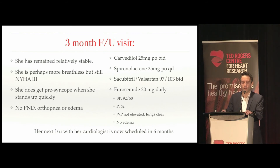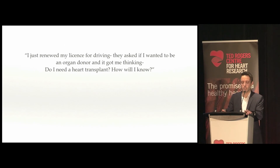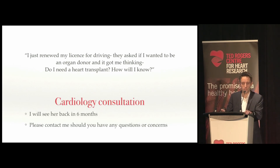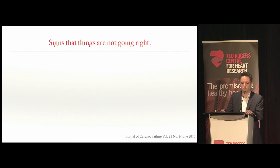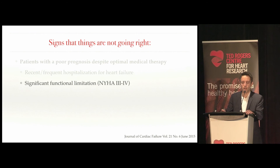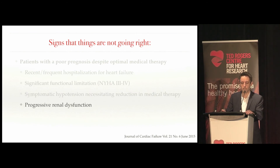At the three-month follow-up visit, she's doing relatively well. She's still functional class three, and she does get some presyncope when she stands up, which is pretty common with the medical therapy. She's now been titrated up to good goal-directed medical therapy. She's still on a little Lasix, blood pressure is a bit better at 92 over 50, heart rate is 62, JVP is not high, lungs are clear, no swelling, and she's due to see her cardiologist in six months. She asks how she'll know if she needs a heart transplant. Signs that things are not going well include frequent hospitalizations, significant functional limitation, symptomatic hypotension, progressive renal dysfunction, and a high diuretic requirement — all should be quite worrisome.